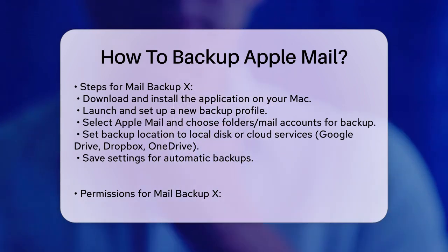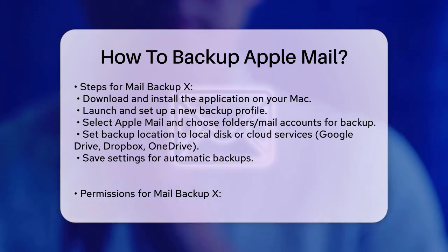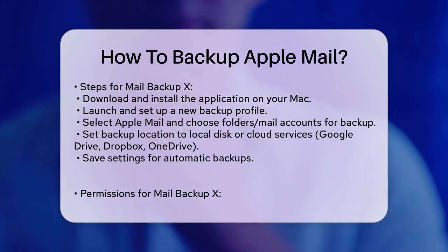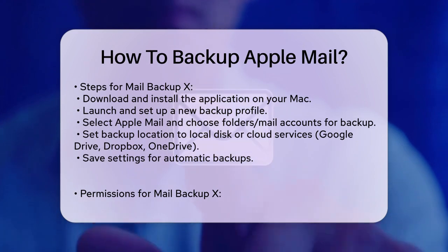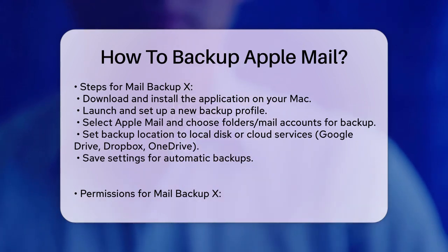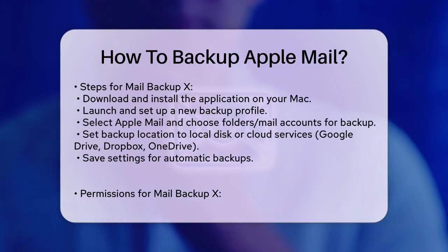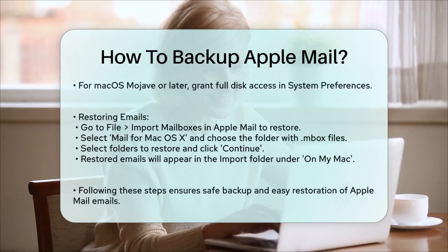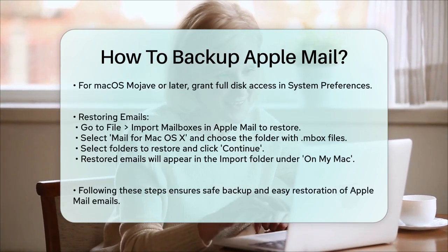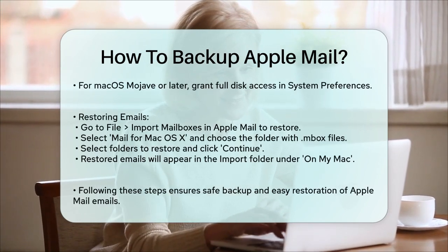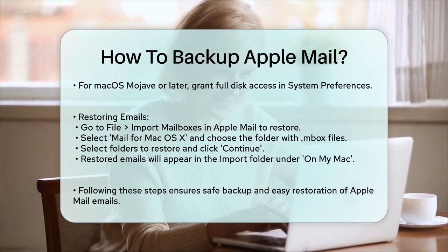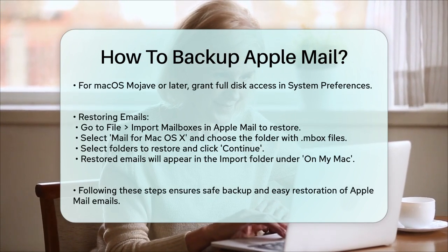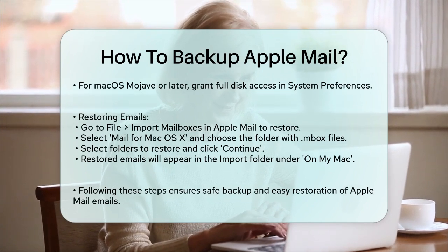Detailed Steps for Mail Backup X. To use Mail Backup X, follow these steps. Download and install Mail Backup X on your Mac. Launch the application and set up a new backup profile. Choose Apple Mail and select the folders and mail account you want to backup. Set the backup location to either a local disk drive or a cloud service. Save your settings and the backup will start automatically. If you're using macOS Mojave or later, ensure you grant Mail Backup X full disk access in the system preferences under Security and Privacy.